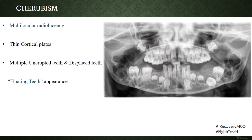Radiographically, cherubism presents as a multilocular radiolucency with thinned-out cortical plates. Multiple unerupted deciduous and permanent teeth as well as displaced teeth may be appreciated. The multilocular radiolucency is seen bilaterally in the mandibular ramus area. These radiolucencies generally involve the posterior angle and ramus — it should be noted that the condyles are generally spared. Multiple unerupted teeth present at different levels give a 'floating teeth' appearance.